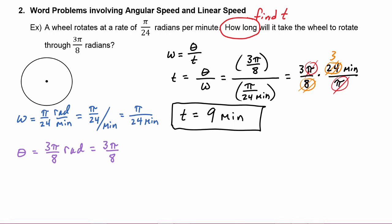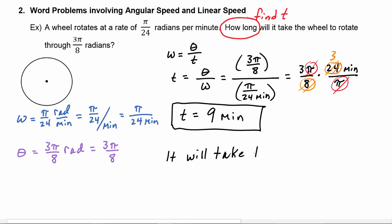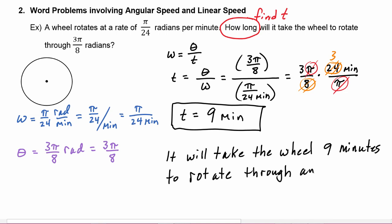It will take the wheel nine minutes to rotate through an angle of 3π/8 radians when rotating at a rate of π/24 radians per minute. Since this is a word problem, we should give our answer in a sentence: 'It will take the wheel nine minutes to rotate through an angle of 3π/8 radians.'